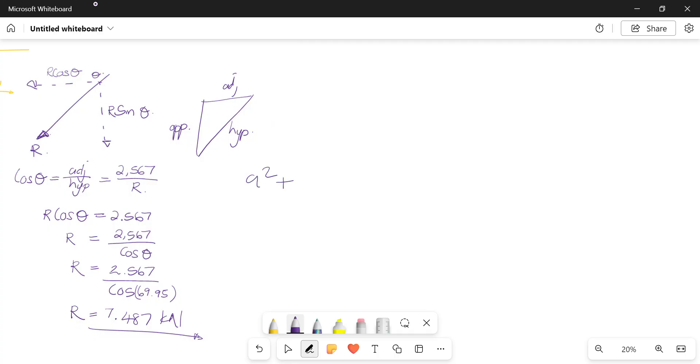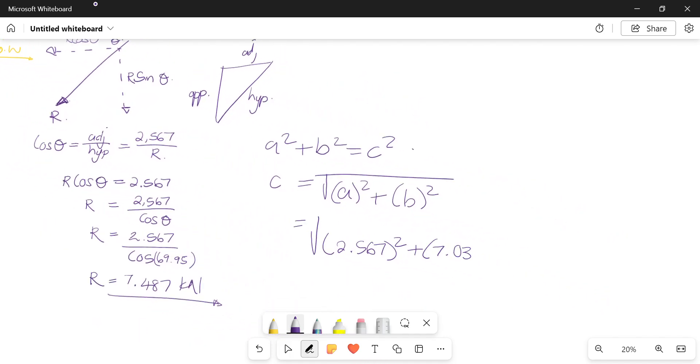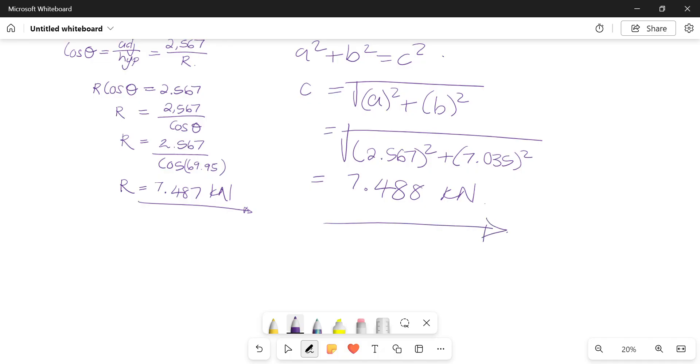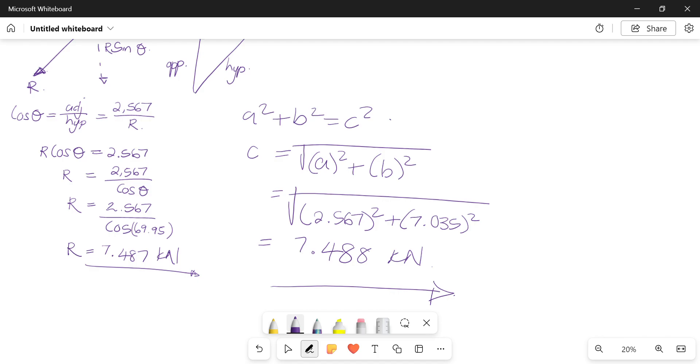If you decided to use method two, we know that a squared plus b squared equals c squared. That's the Pythagorean theorem. If you're trying to find your hypotenuse, it would be the root of a squared plus b squared. Then you can just say the root of 2.567 squared plus 7.035 squared. This equals 7.488 kilonewtons. Close enough - it could just be a matter of decimal places. Essentially, there's more than one way to do it.